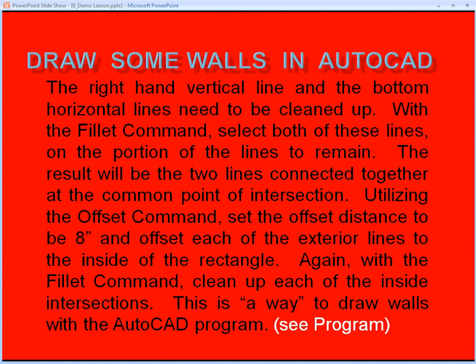With the fillet command, select both of these lines on the portion of the lines to remain. The result will be the two lines connected together at a common point of intersection. Utilizing the offset command, set the offset distance to eight inches and offset each of the exterior lines to the inside of the rectangle. Again, with the fillet command, clean up each of the inside intersections. This is a way to draw walls in the AutoCAD program, not the only way.